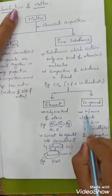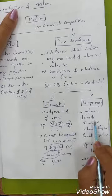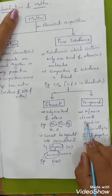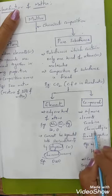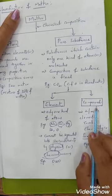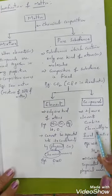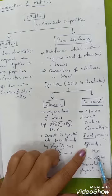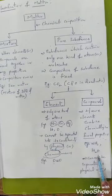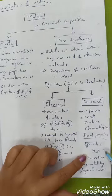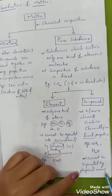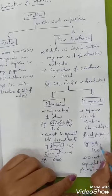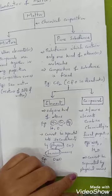The second type of pure substance is a compound. If two or more elements are combined chemically in fixed proportions, that is known as a compound. Examples of compounds are ammonia (NH3) and water (H2O). In ammonia, nitrogen and hydrogen cannot be separated by physical means, but they can be separated by chemical means.